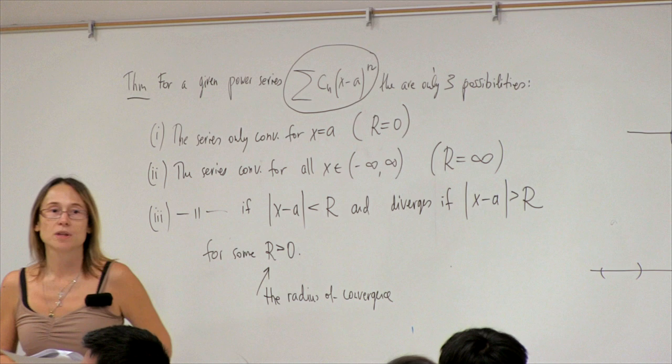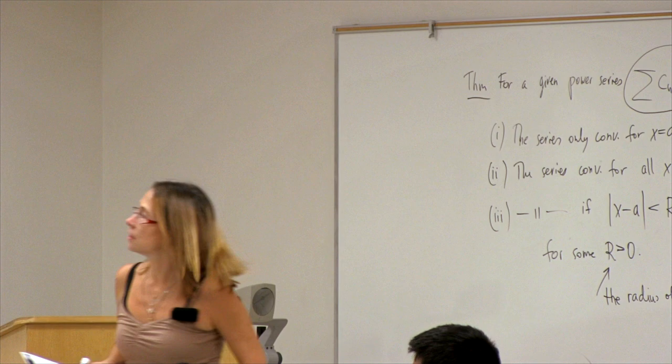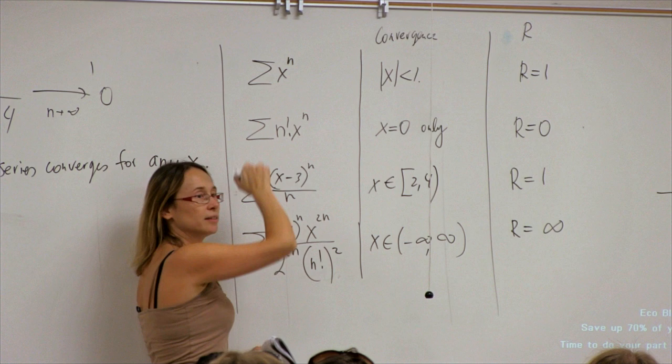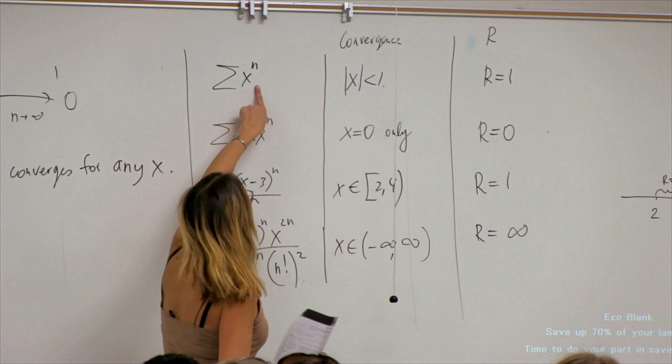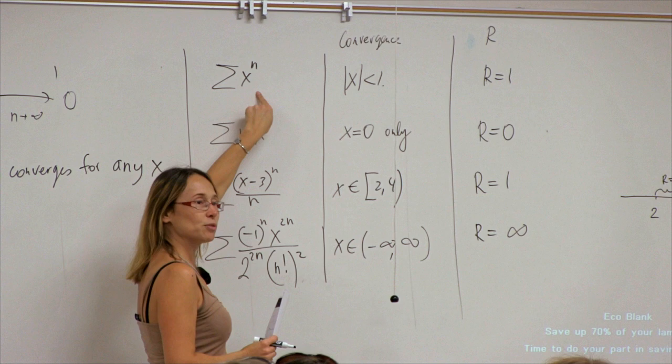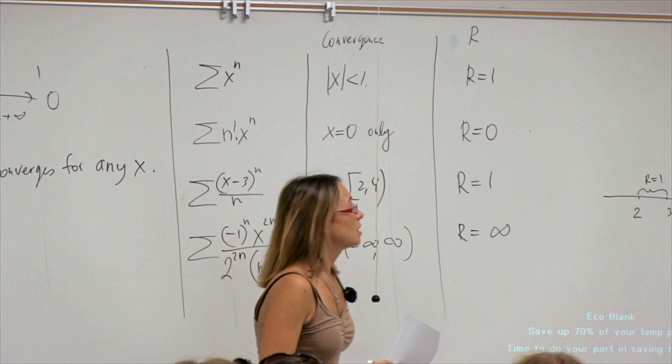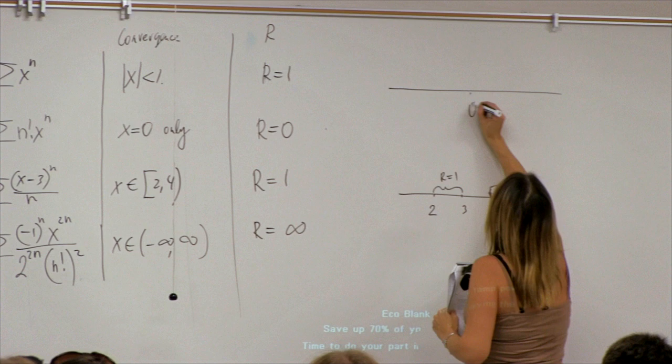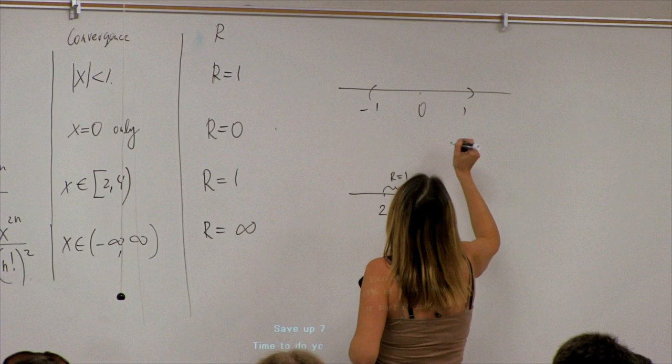A student asks how we know the radius of convergence for x^n is 1. This was our first example — we identified it as a geometric series with r equals x. A geometric series converges when r is less than 1 in absolute value, and this series is centered at 0, so it converges when |x| < 1, which makes r equal to 1.